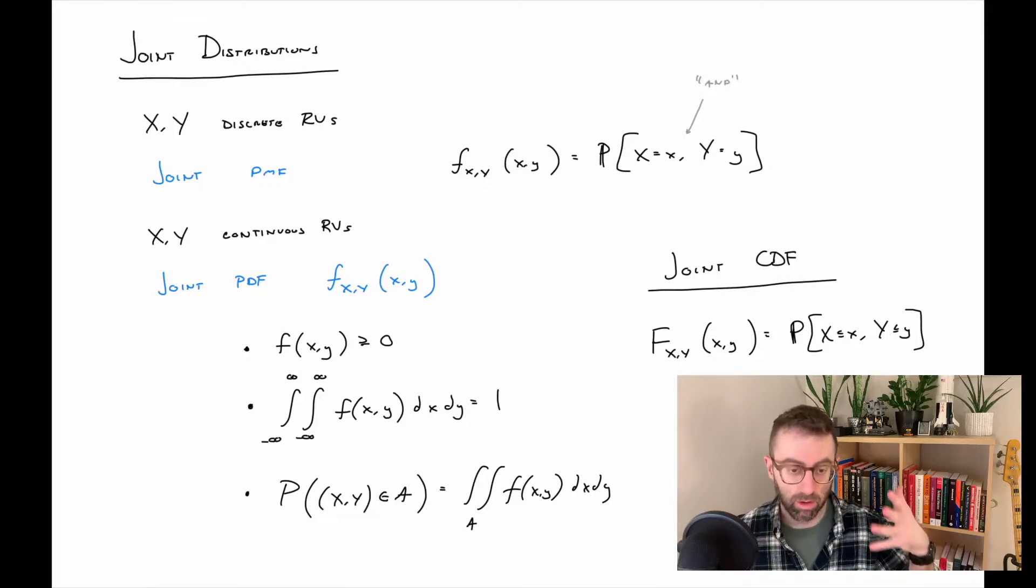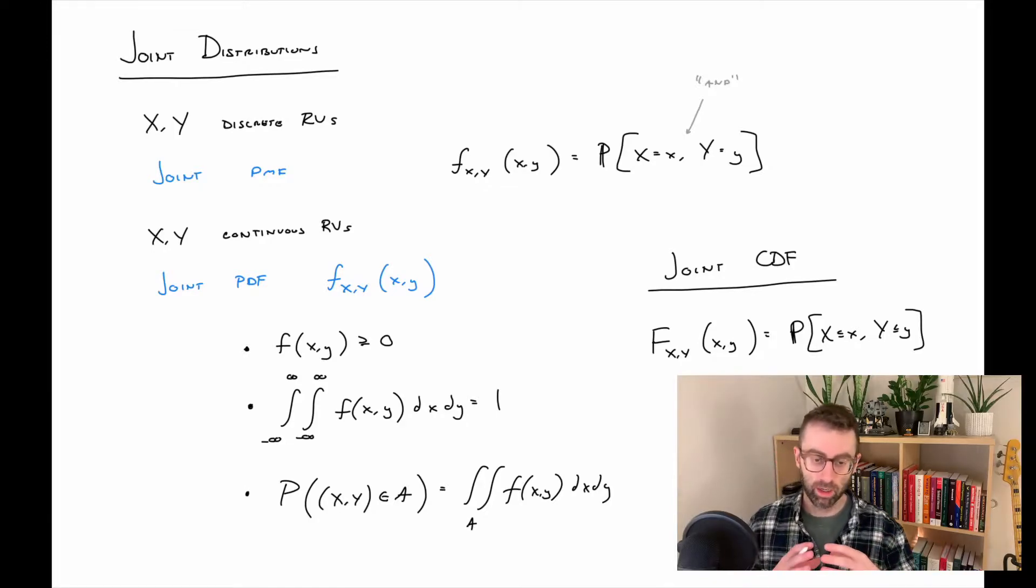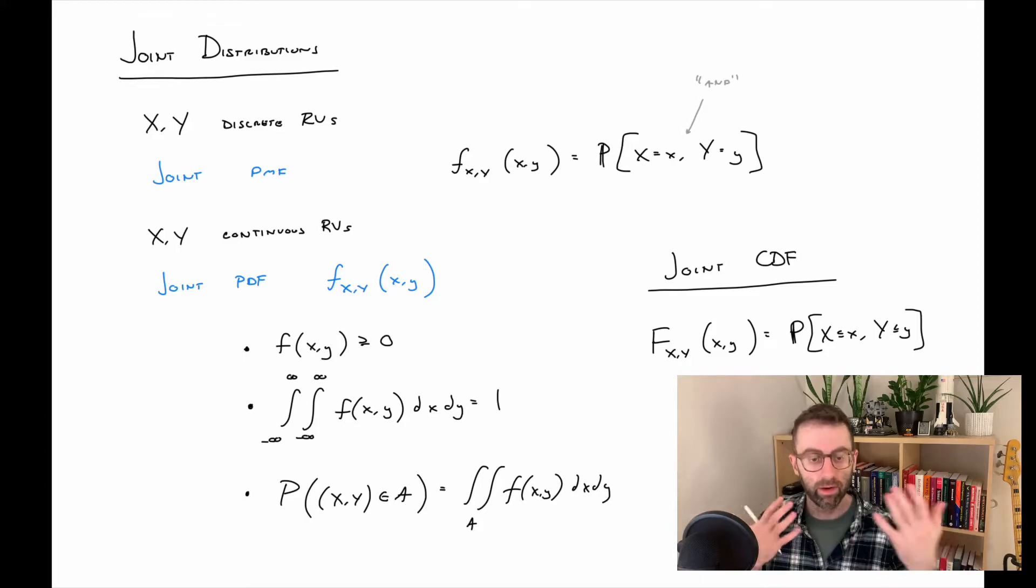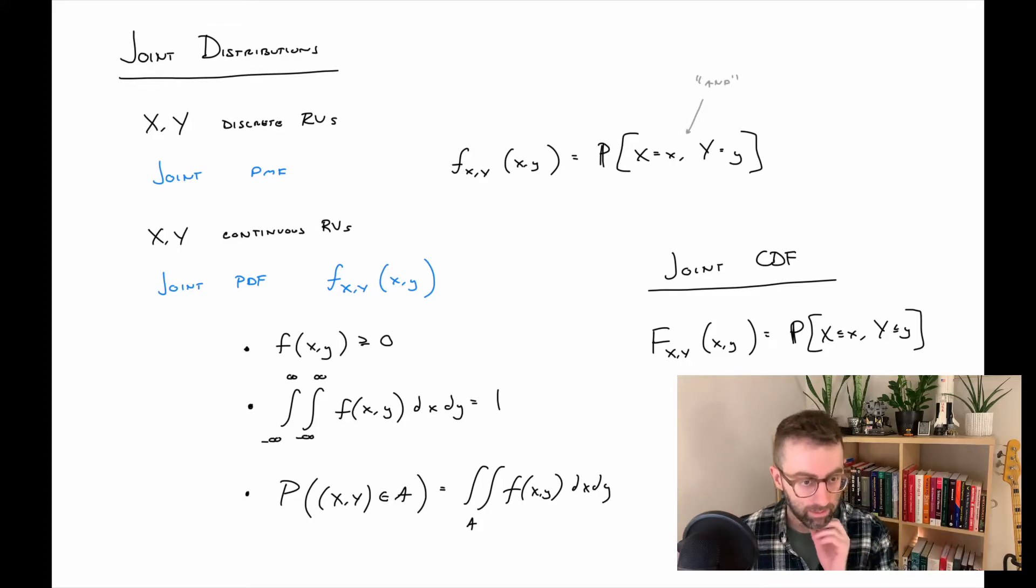So when we're talking about multiple random variables at once, we want to talk about joint distributions. That is, how are these random variables distributed together? How do they vary together?